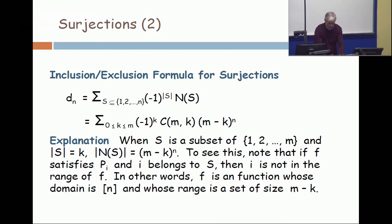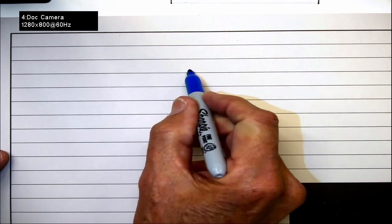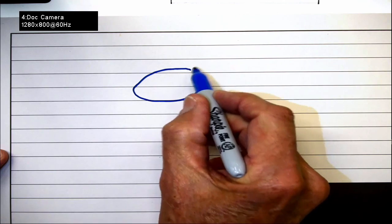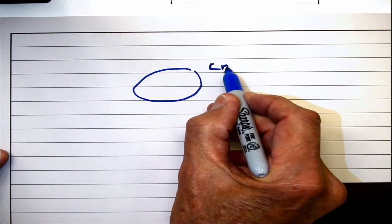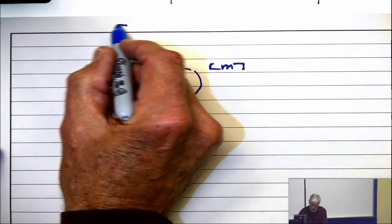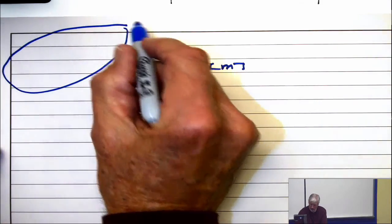And let's make sure that we're together on why that's the term. So here is your small set. This is 1 to m. And here's your big set, 1 to n.